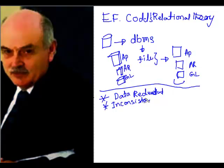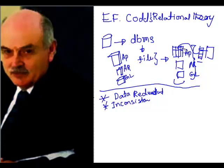Similarly, these file-based systems — when programs were using this data, they had to use the same kind of structure of the data. However the columns were arranged in the data file, they had to use the same structure to read and write the data. If you had any change in these columns, you had to open up your programming code and change the structures as well. So there was no standardization for those elements.